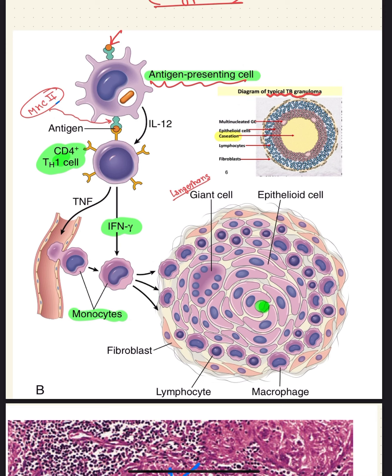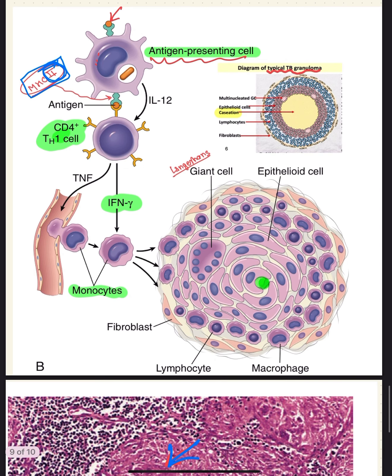The antigen-presenting cell will process the presented antigen and present it on the surface via MHC Class II molecules. These MHC Class II molecules will then present the processed antigen to CD4 lymphocytes.